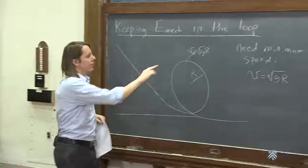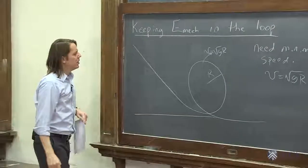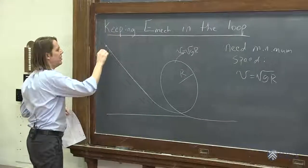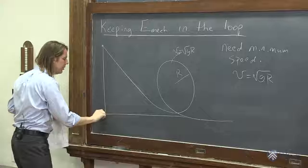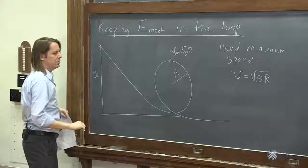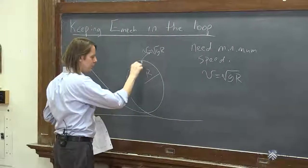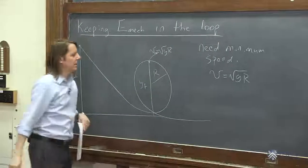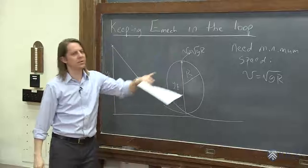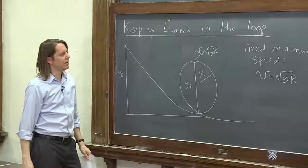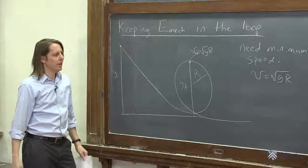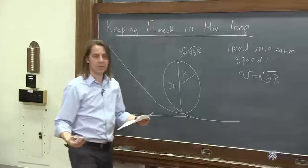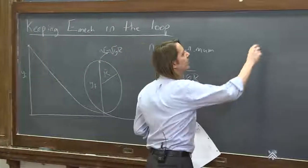So when we get here, that's the speed we need to be going. So where would we start up here? What height up here, y initial, and would end up at a height here, y final, and end up with a kinetic energy that's equivalent to having square root of g times r. Well, all we've got to do is apply delta k plus delta u equals 0.